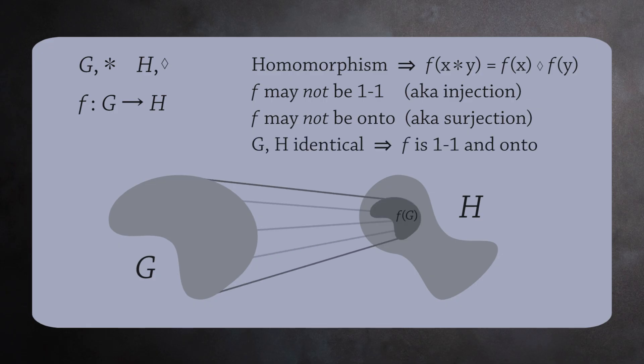But for the groups G and H to be identical, we need the homomorphism f to be one to one and onto. f needs to be both an injection and surjection. This way we can pair each element in G with a unique element in H, and vice versa.